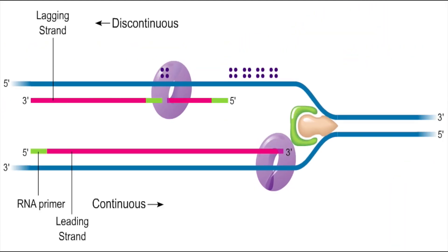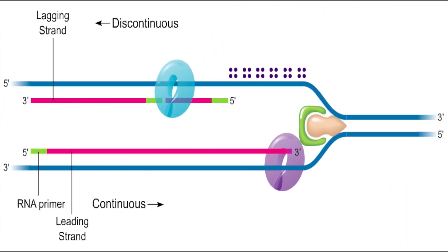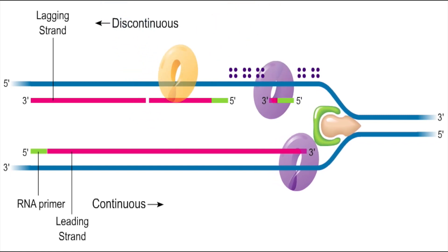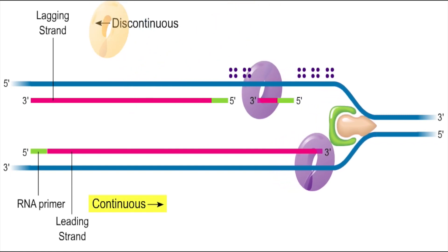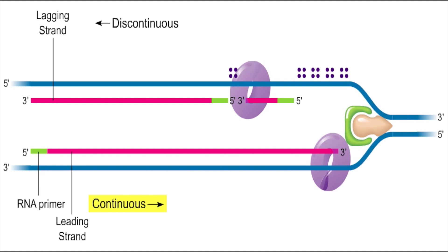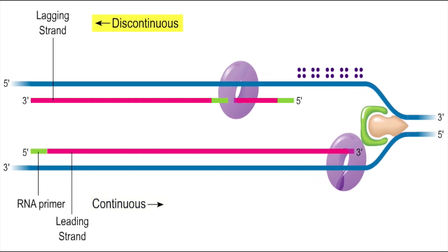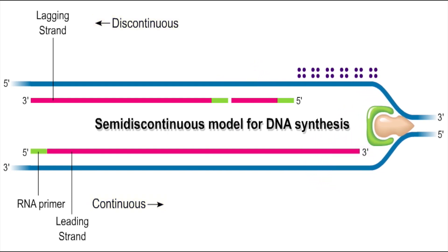The process repeats as the DNA continues to unwind. Because one new DNA strand is synthesized continuously and the other is synthesized discontinuously, this model is called the semi-discontinuous model for DNA synthesis.